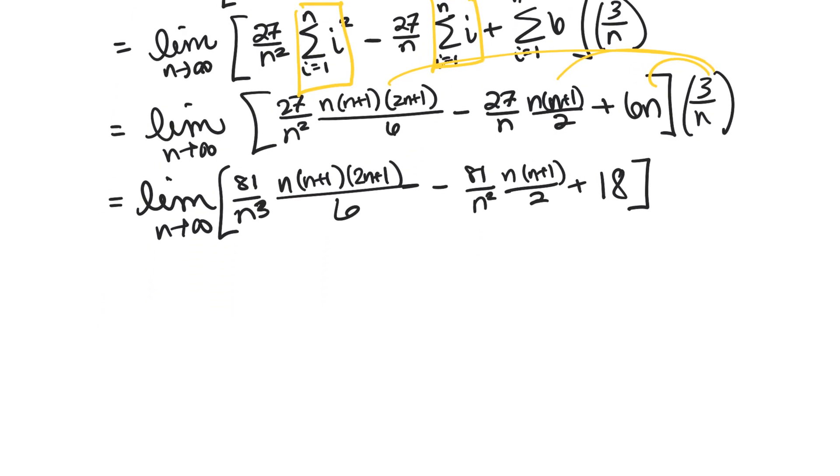So now we're ready to take this limit and we know that when we're taking limits of rational functions as n goes to infinity we can look at just the highest power. So if we look at the highest power of n in this first term we're going to have the 81 and then it's going to be multiplied by this n and this n and this 2n. So we're going to get 162 n cubed divided by 6n cubed.